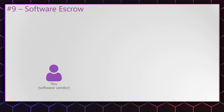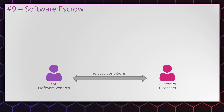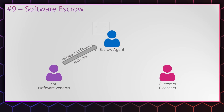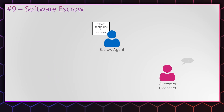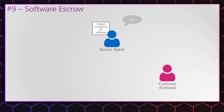You give the source code, documentation, and release conditions to the neutral third party — the escrow agent. If one of the release conditions occurs, the escrow agent will hand the data to the customer. In the animation: you and the customer agree on release conditions, you involve the escrow agent and hand over the release conditions and software, then if you go bankrupt the customer asks the escrow agent — the release condition is met — and the escrow agent hands over the software.